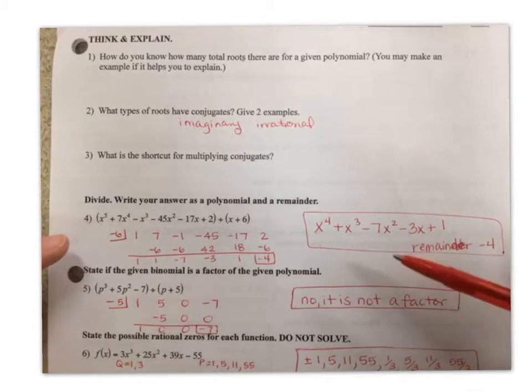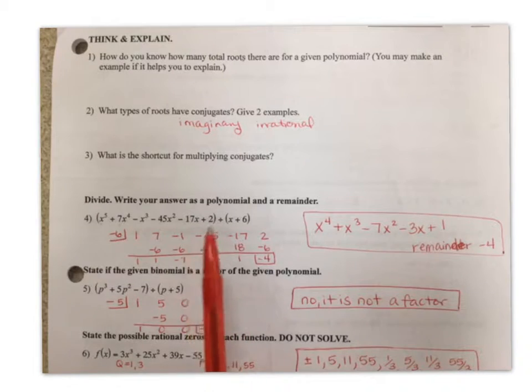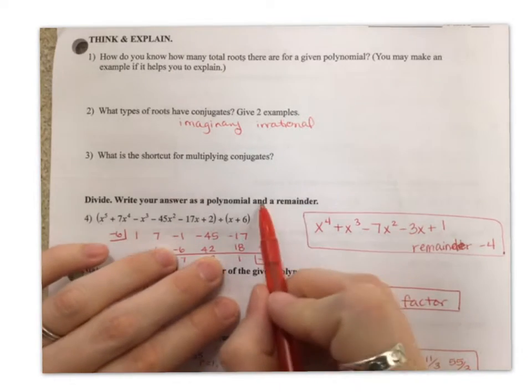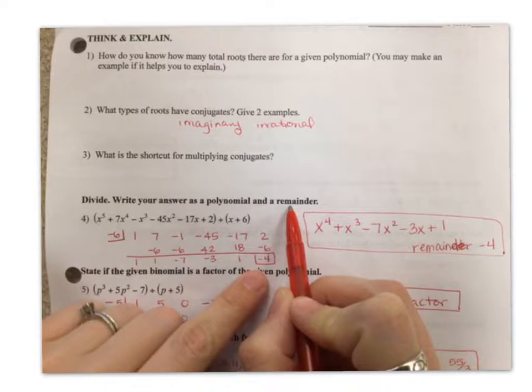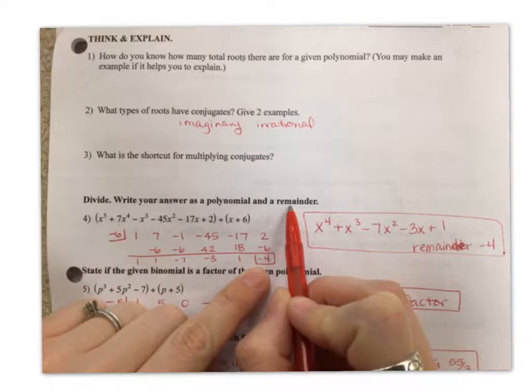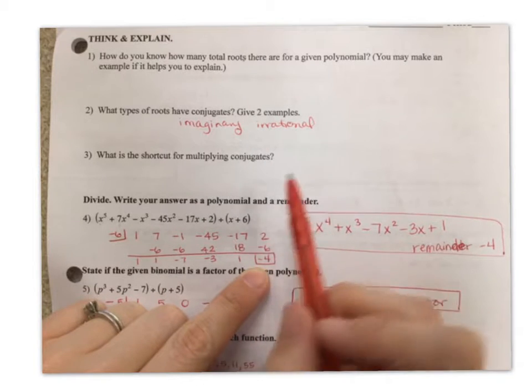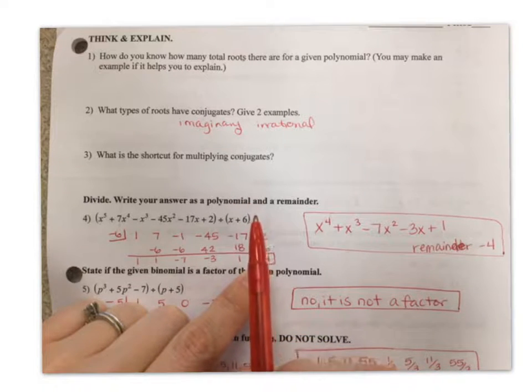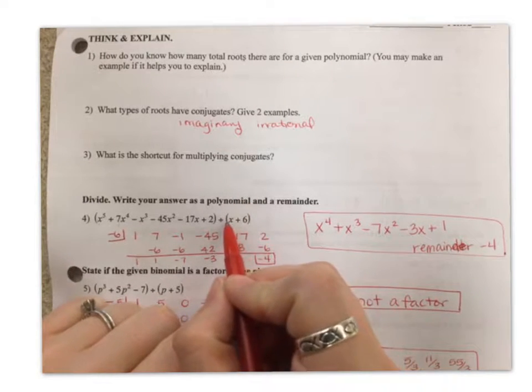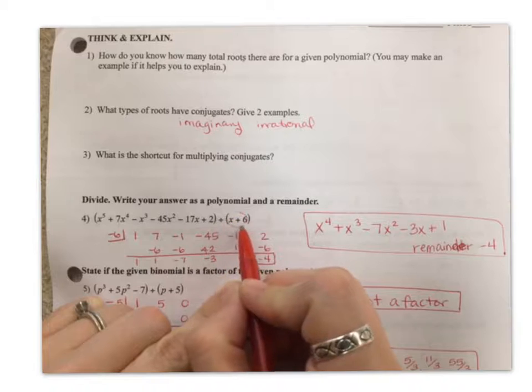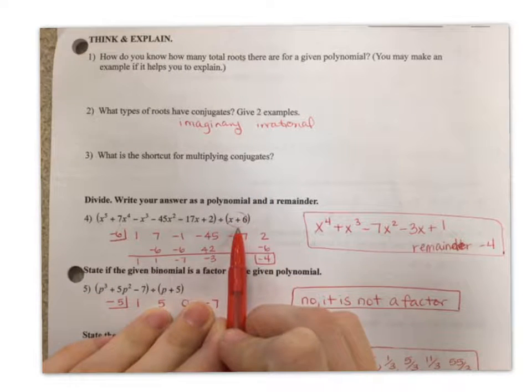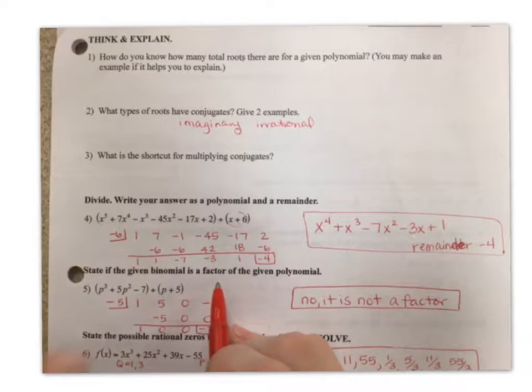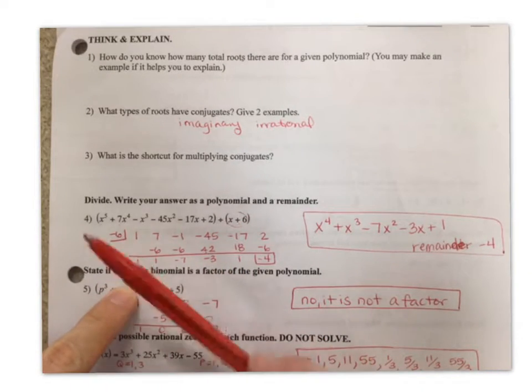Okay, so number 4, dividing. If you read the directions, it says write your answer as a polynomial and a remainder, which means it's very likely that you're not going to get 0 in this bottom box. That's okay. It is not asking you to solve further. It's just asking you to do the division one time. Remember that when you pull your root from parentheses, you need to think opposite. So instead of using 6, you need to use negative 6.